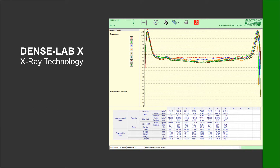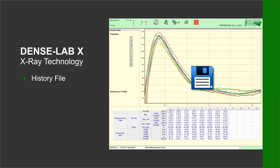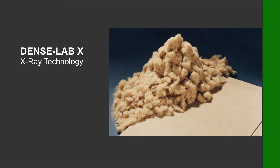All measurements will be stored in a history file and can be recalled at any time. The system has a so-called run-in mode which arranges a slow, gradual increase of the X-ray voltage, thereby increasing the lifetime of the X-ray tube considerably.